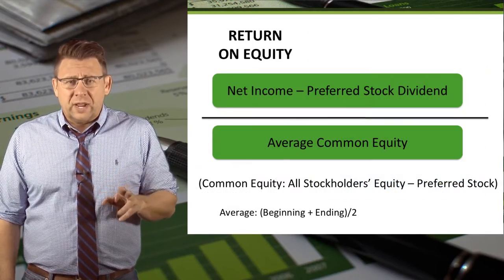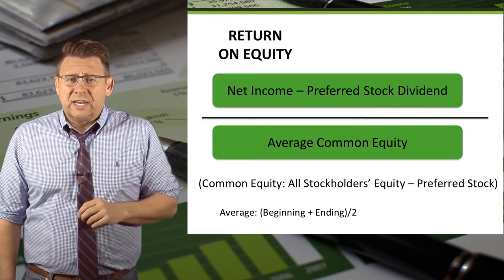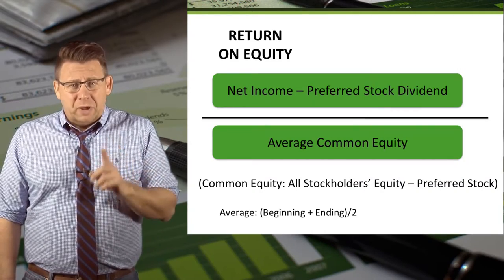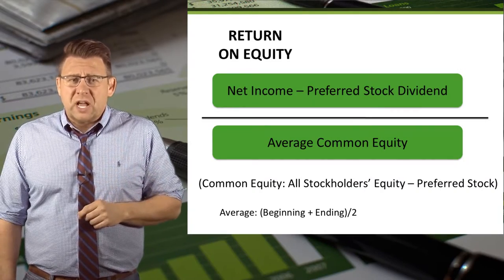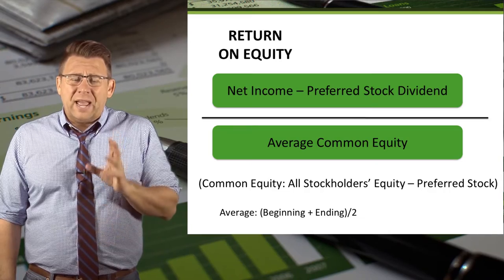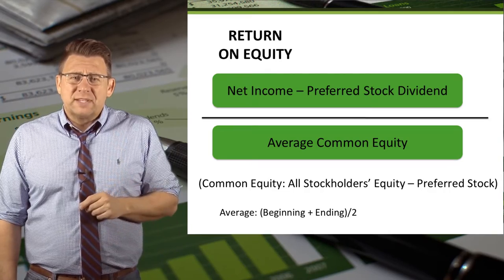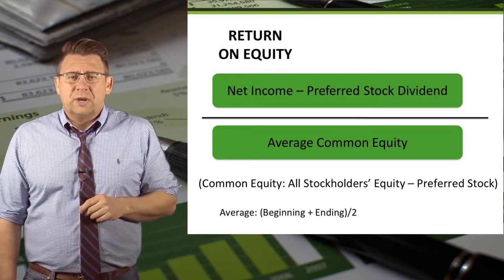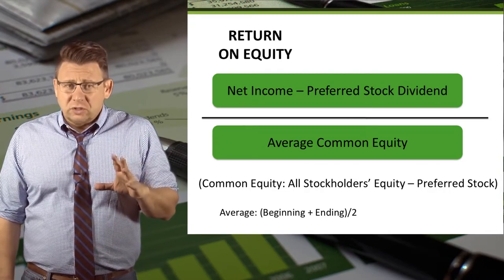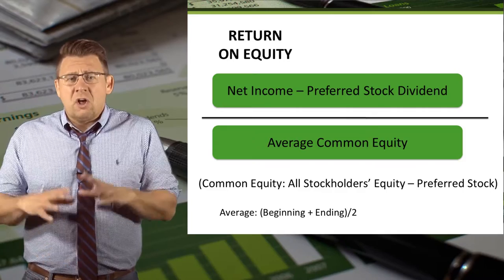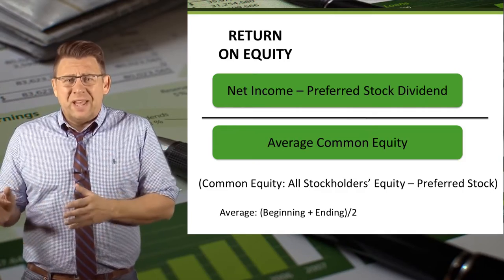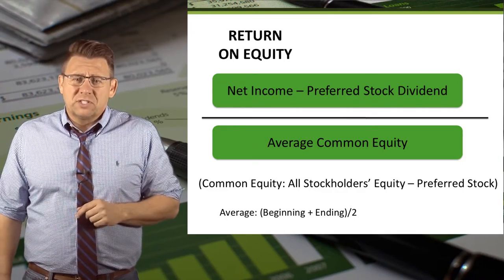Return on Equity is calculated as net income minus preferred stock dividends, divided by average common stockholders' equity. Common stockholders' equity is all of the stockholders' equity minus the preferred stock.